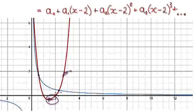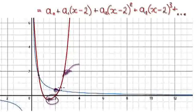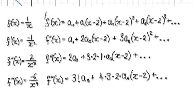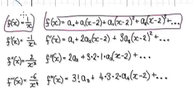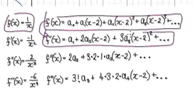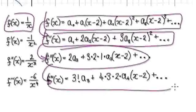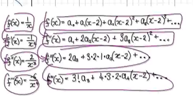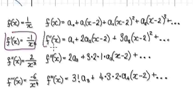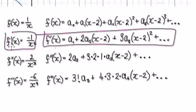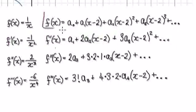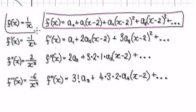We demand that the first derivative of the red line matches the first derivative of the blue line, and then we demand the second derivative of the red line to match the second derivative of the blue line. Eventually, the red line will map on top of the blue line. But first, we require the functions themselves to match up.